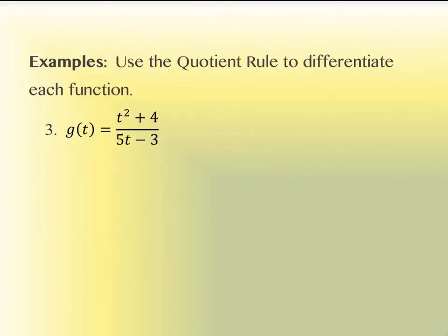Looking at our first example: this one doesn't simplify — I can't factor the numerator, reduce with the denominator, and get something clean like in the first example. So we need the quotient rule. The derivative rule says: rewrite the denominator, which is 5t − 3, then take the derivative of the numerator. The derivative of t² + 4 is 2t.